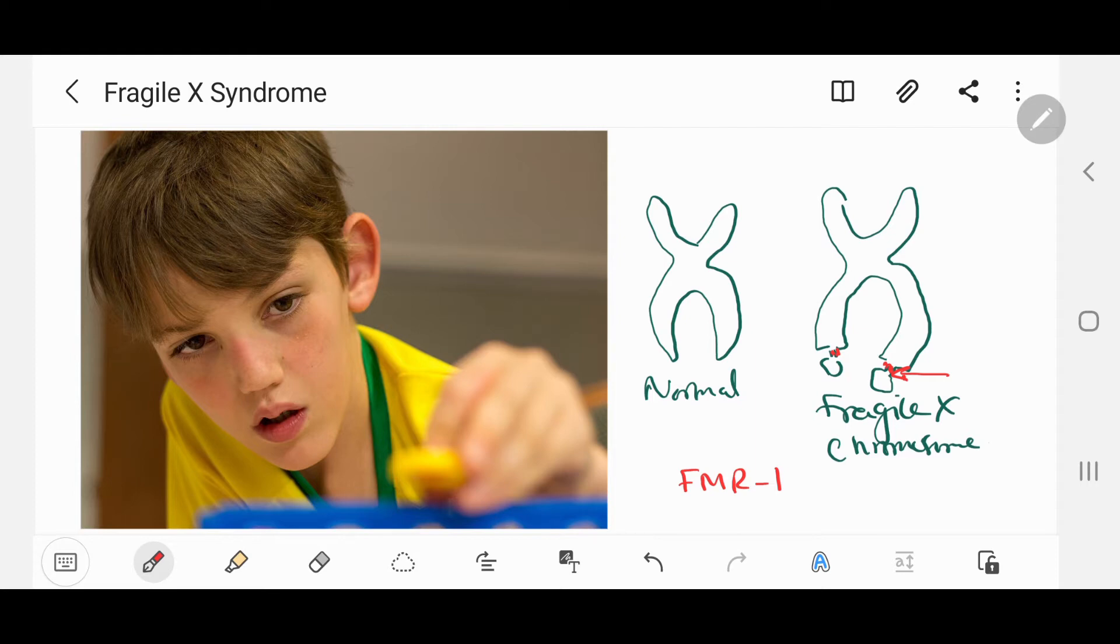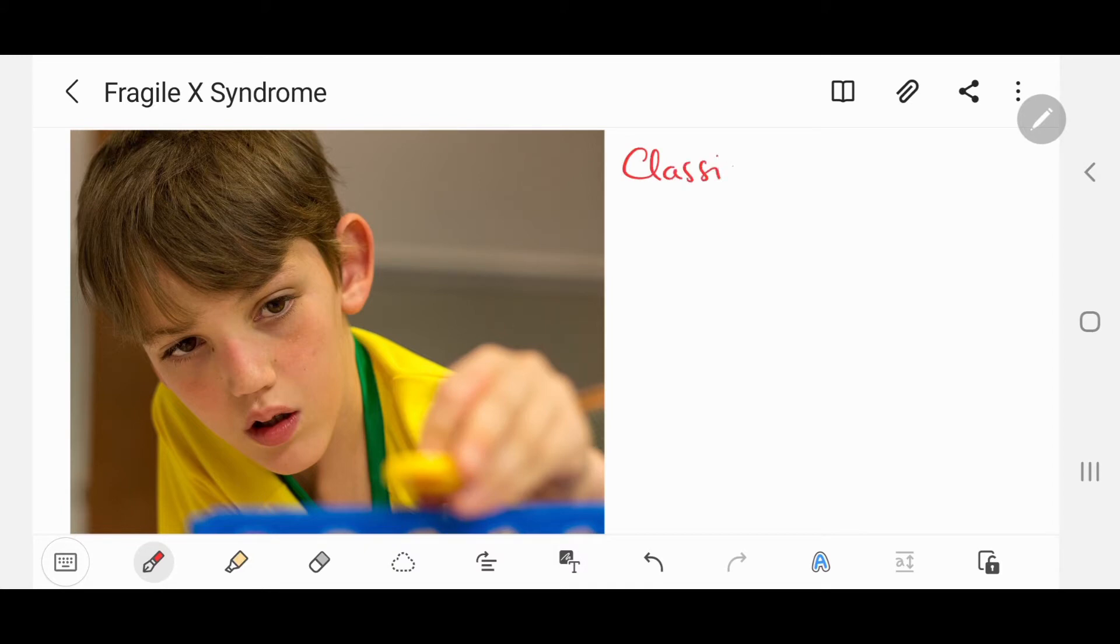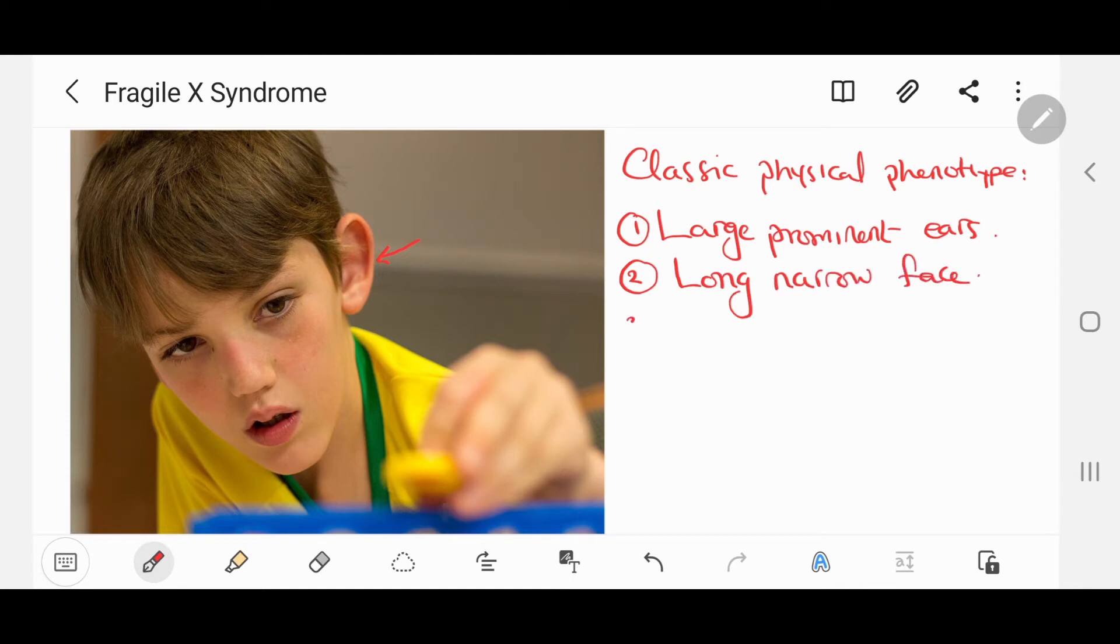Fragile X Syndrome presents as a classic physical phenotype with the following features. First, large prominent ears as we can see in the photo of this boy, with a long narrow face as well, and macro-orchidism or large testes.